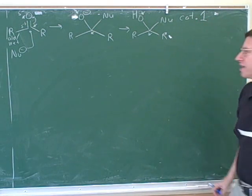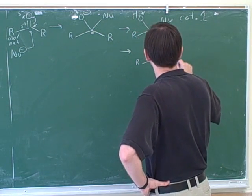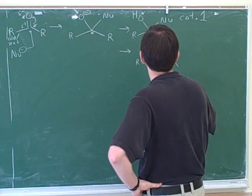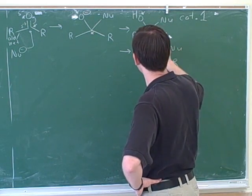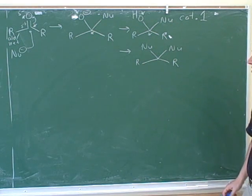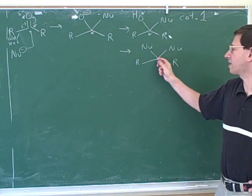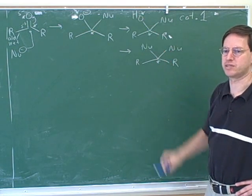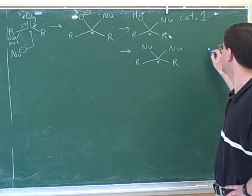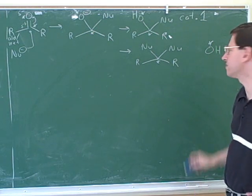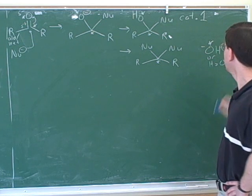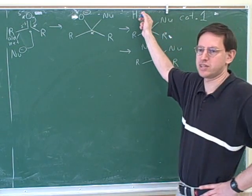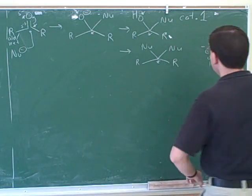There are two other important categories. Sometimes after the first nucleophile attacks, a second nucleophile attacks. Notice that now the carbonyl oxygen is completely gone — it's been kicked off by the second nucleophile, usually leaving as water, or sometimes as hydroxide. This is what we would call category two.